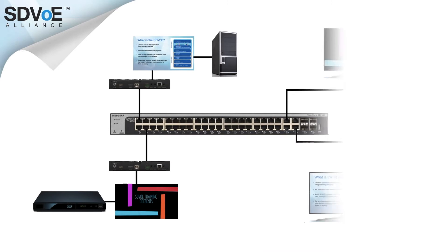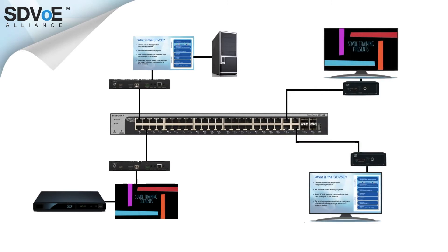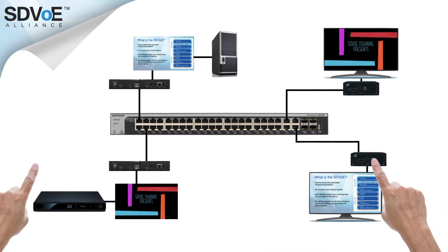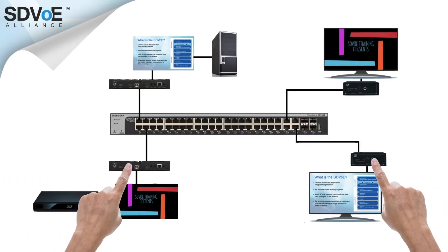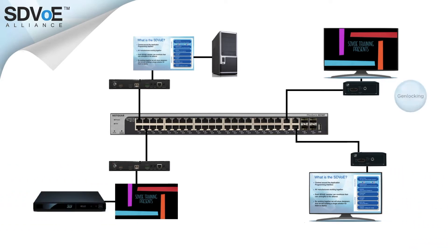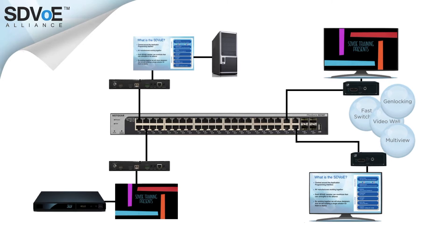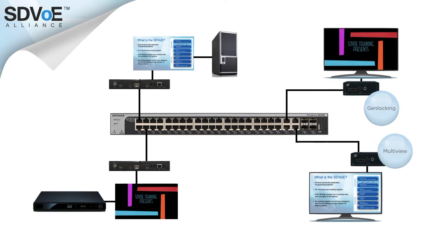In SDVoE the video mode is primarily a function of the receiver. The transmitter sends the data and the receiver can be configured for genlocking, fast switching, video wall, and multi-view. And because each receiver works independently, two receivers receiving the same content from the same transmitter can be in two different video modes. You don't get that with a matrix switch.